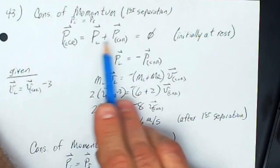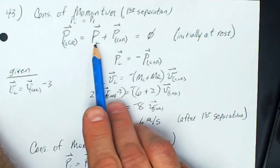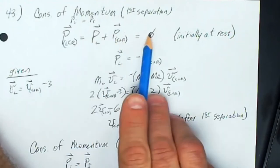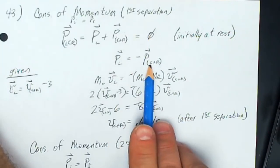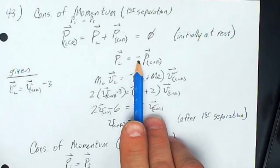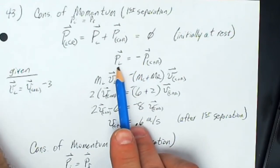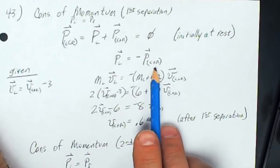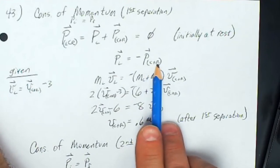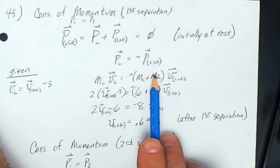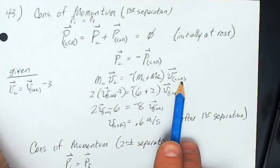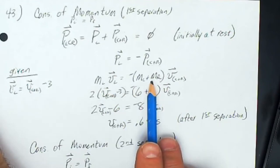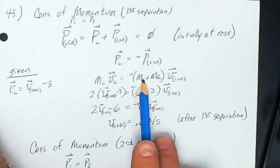Each piece will have momentum — one will have negative momentum to the left and the other positive momentum to the right — but they add to zero; their magnitudes are the same but directions are opposite. The piece on the left has momentum mass times velocity with subscript L, and the piece to the right is the center and right blocks together, labeled C plus R, with mass of C plus mass of R. The masses are given: two kilograms each for the left and right blocks and six kilograms for the center block.